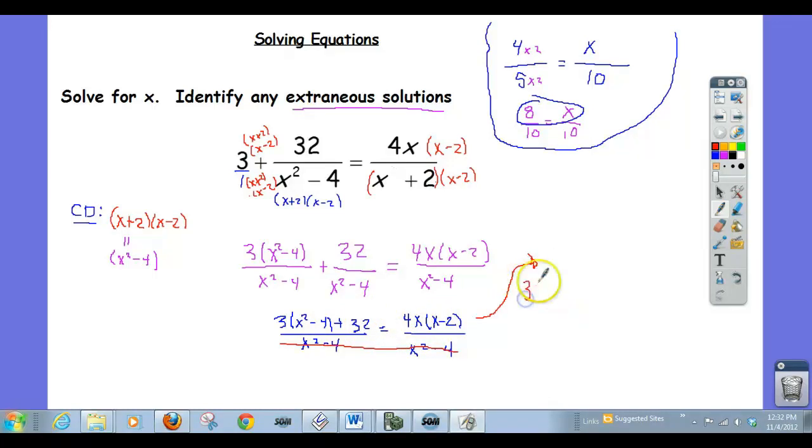3 times x squared minus 4 plus 32 equal to 4x times x minus 2.